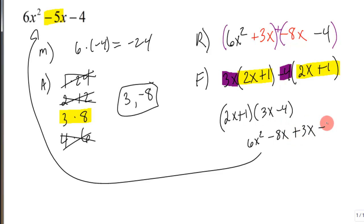1 times 3x, 3x. And 1 times negative 4, negative 4. And so we see that this multiplies right back out to that with a foil.